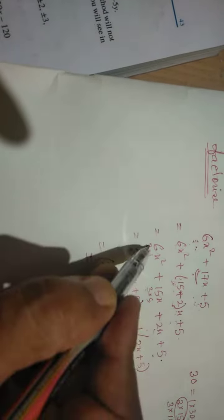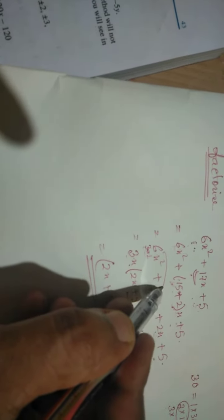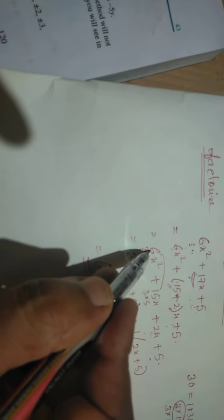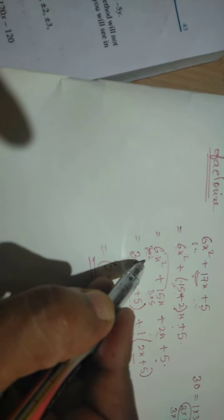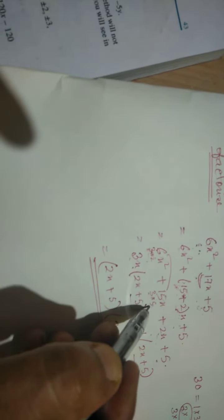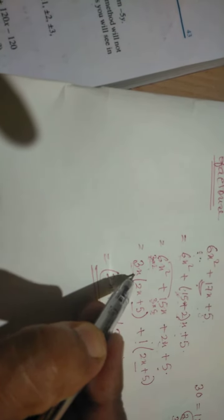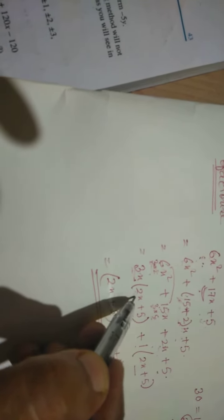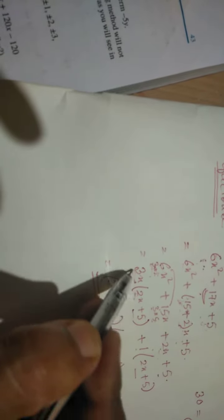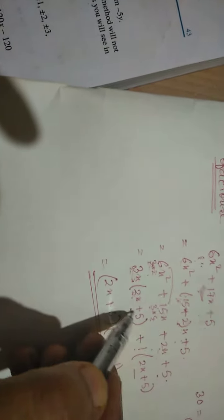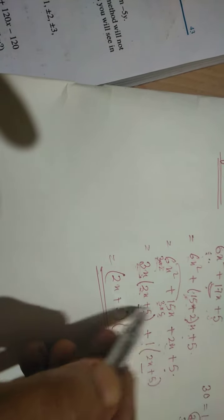Then what is common from these two parts? 6 you can break 3 into 2, 15 you can break 3 into 5. Now you have 3 common and x common: 3x. Then what's left? 2x is left because 3 times 2 and 3 times 6, x and x will get x square, plus 5. Yes, 15x.